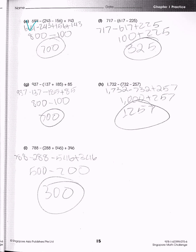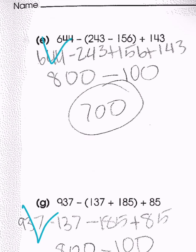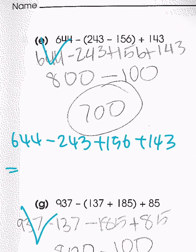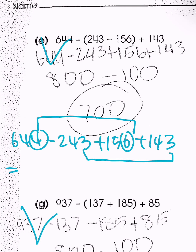Now we're going to solve E, G, and I. Distributing the negative sign gives 644 minus 243 plus 156 plus 143. We add the numbers ending in 4 and 6: 644 plus 156 = 800. And negative 243 plus 143 = negative 100. That gives a total answer of 700.